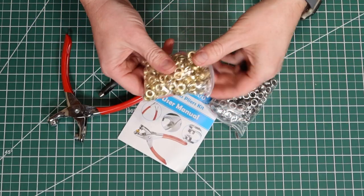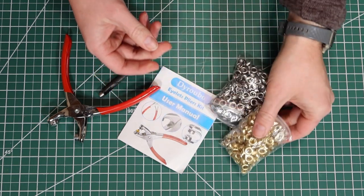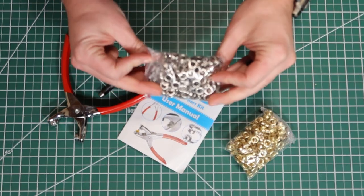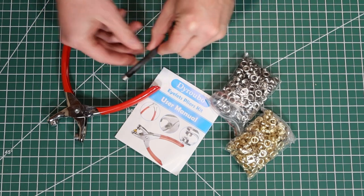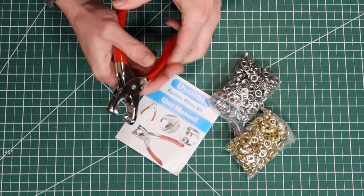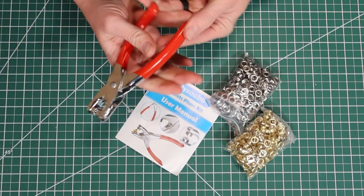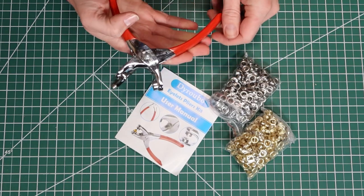This kit comes with 400 gold-colored grommets and 400 silver, a little instruction manual, a leather punch, and the tool here that will allow you to put these grommets into position.